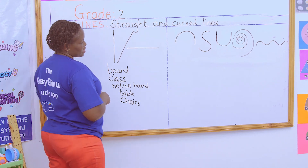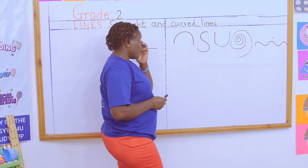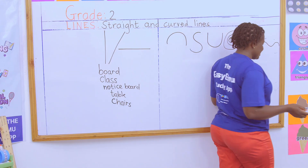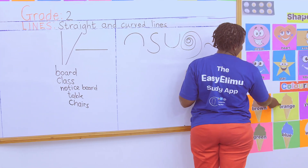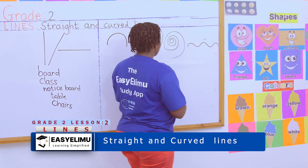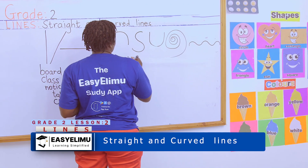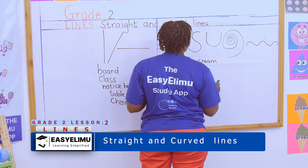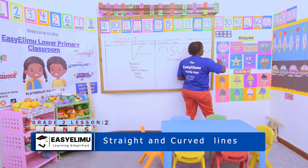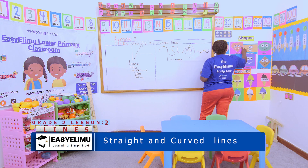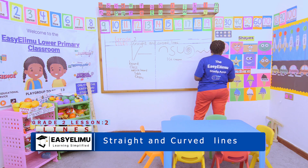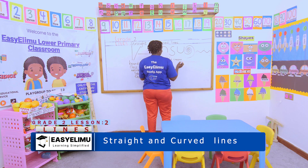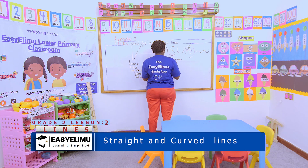Very good! Now let us look for curved lines in our class. Teacher, I have already seen the ice creams on the wall — they have curved lines. Very good! The picture of an ice cream has curved lines. Look at the heart shape — the heart shape has curved lines.